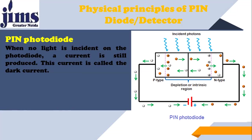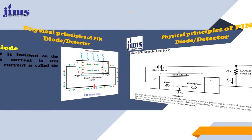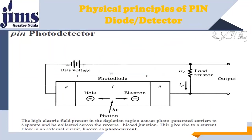This is a term that may be asked in an examination. When no light is incident on the photodiode, a current is still produced, and this current is called dark current. This is another diagram of the PIN photodetector. This is the P-type region, this is the N-type region, and this is the intrinsic region.